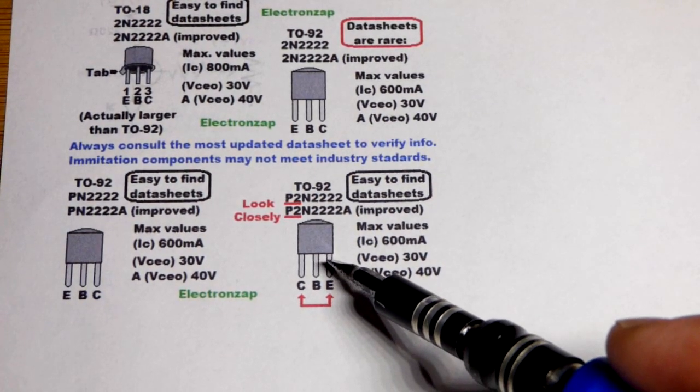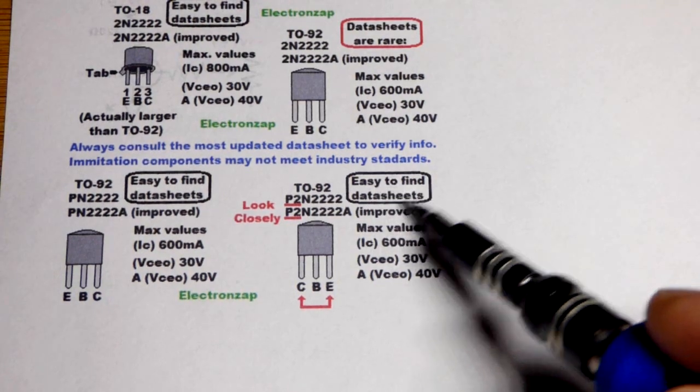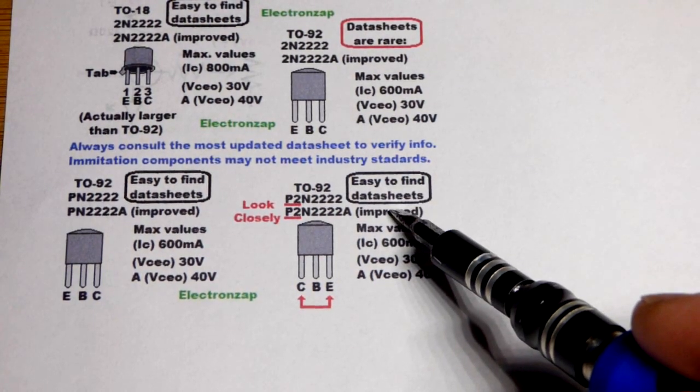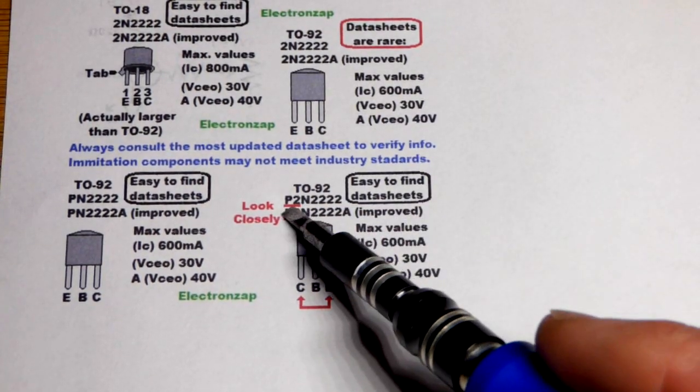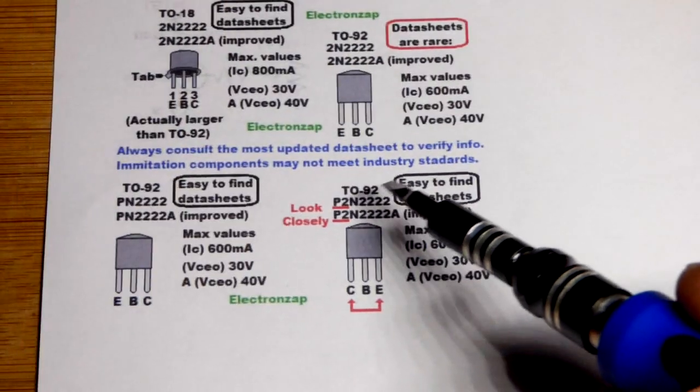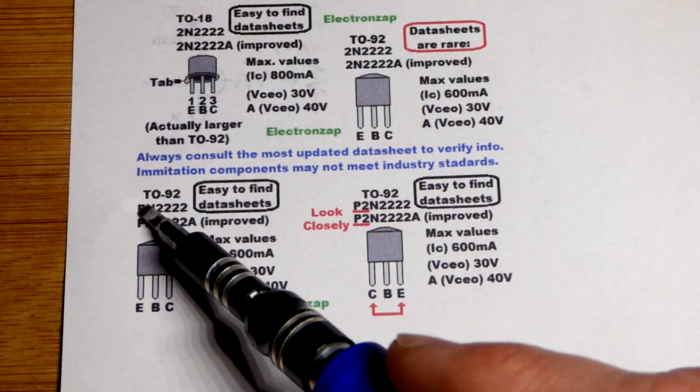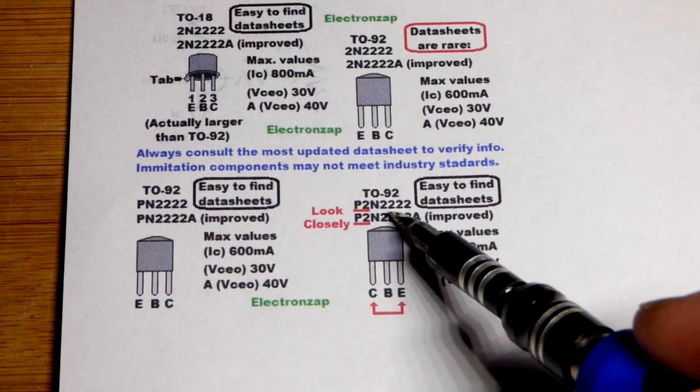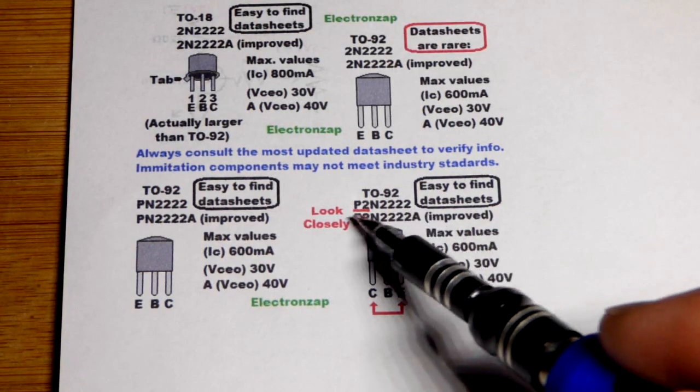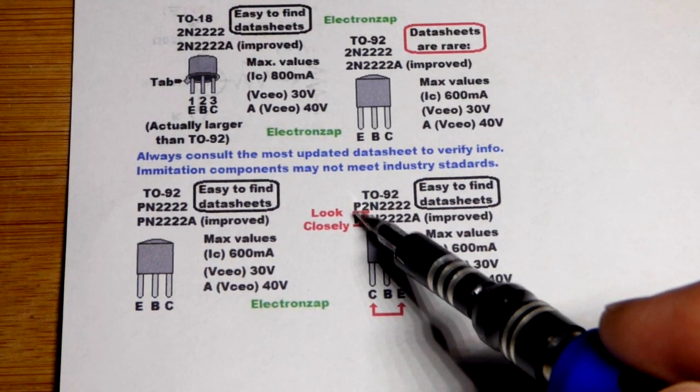Now we have another thing right here and I wrote that it's easy to find these datasheets. So they must pop up a lot too when I'm actually looking just for the 2N2222. So this is a P2. That's the big thing. This is just P, right? The PN2222.